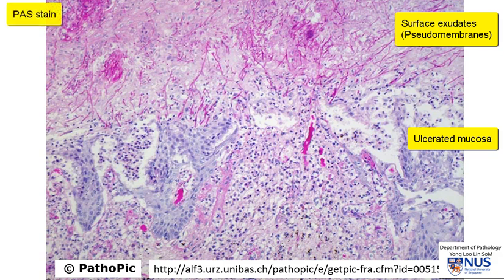What we are looking at is a PAS stain — periodic acid-Schiff — and this stain highlights fungal elements very well. So here we can actually make out thin fungal hyphae and some small yeast forms as well.